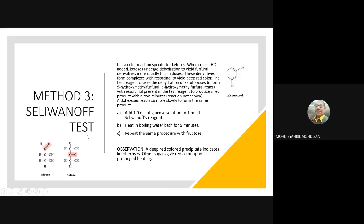Method 3 — Seliwanoff test principle: there are two types of monosaccharides — aldose and ketose. The carbonyl group (CO) differentiates them: in aldose, the carbonyl group is at the end of the structure; in ketose, the carbonyl group is in the middle of the ring. This test is a color reaction specific for ketoses. When Seliwanoff acid reagent is added, ketoses undergo dehydration to yield a furfural derivative more rapidly than aldoses.